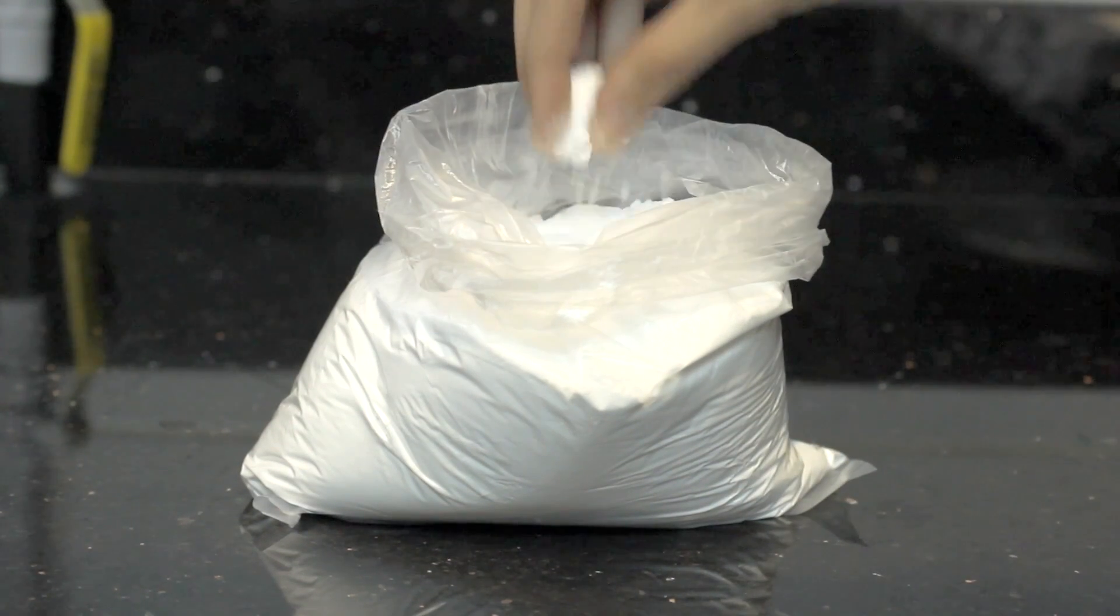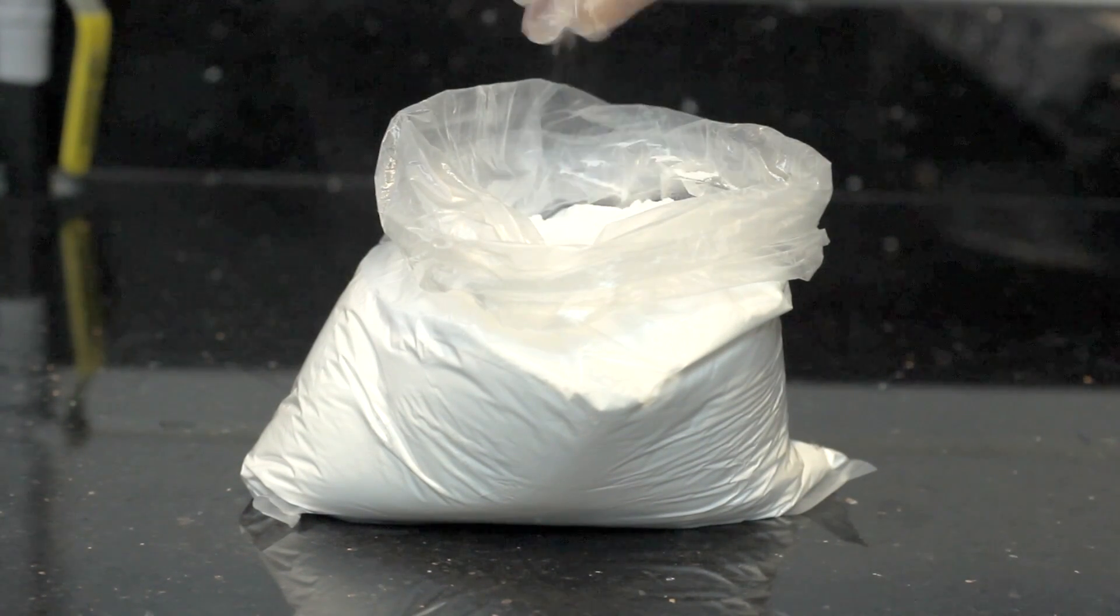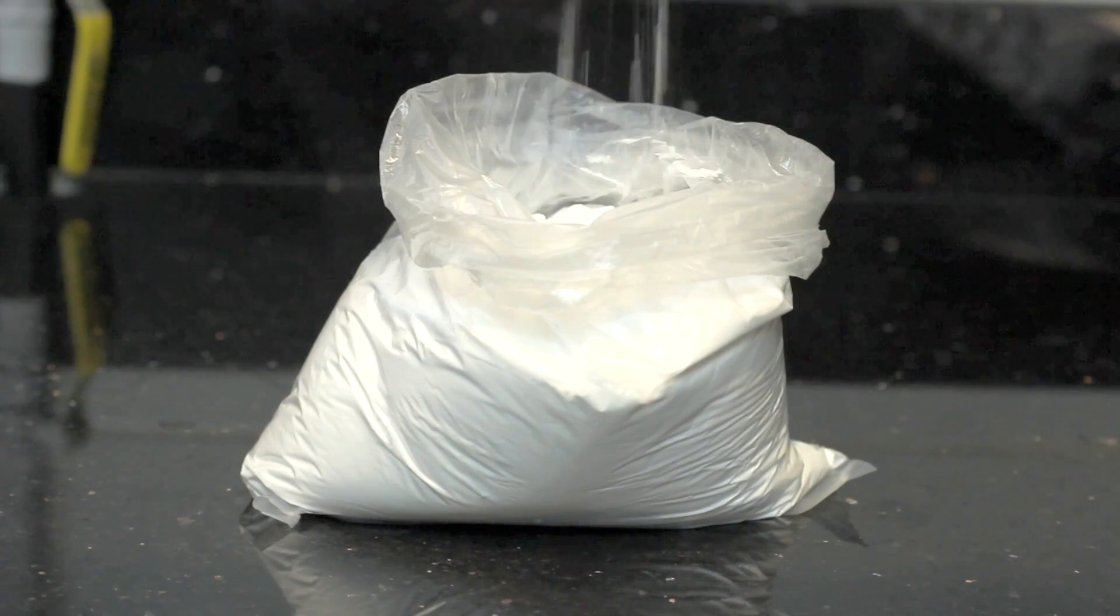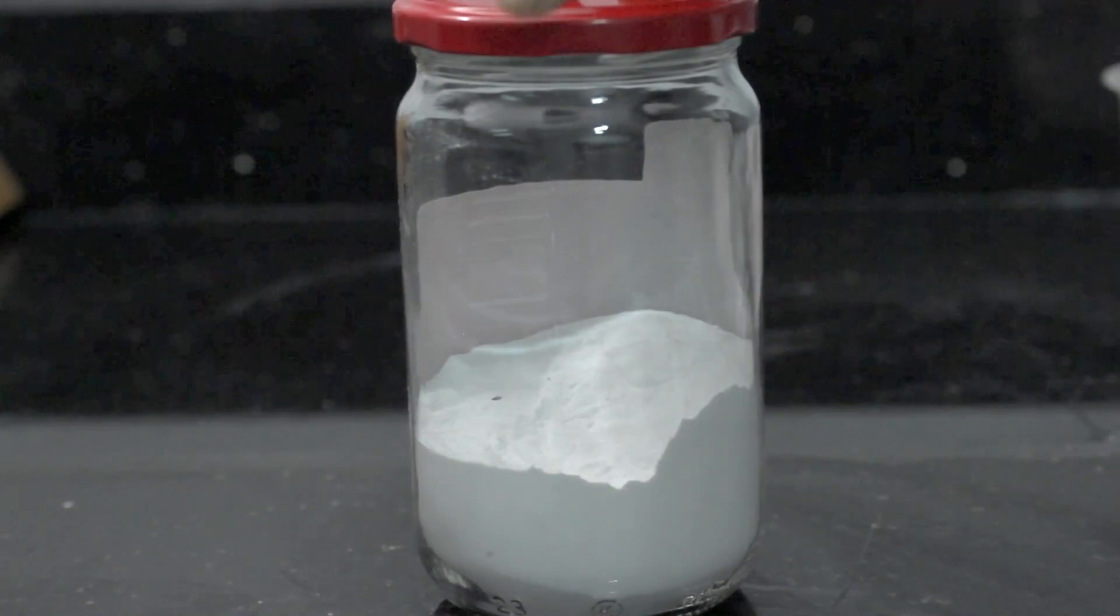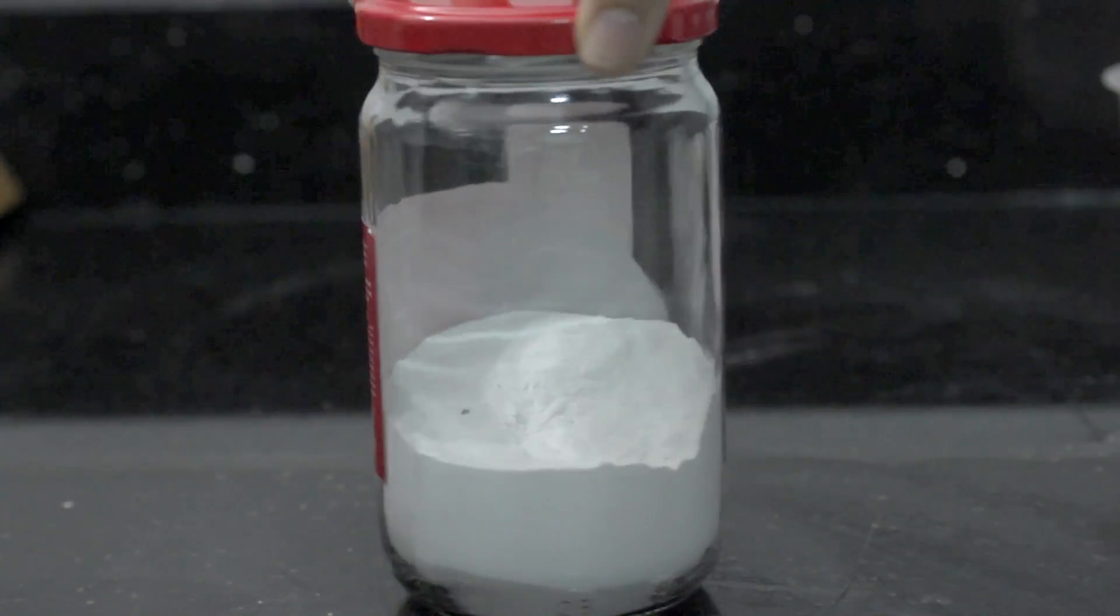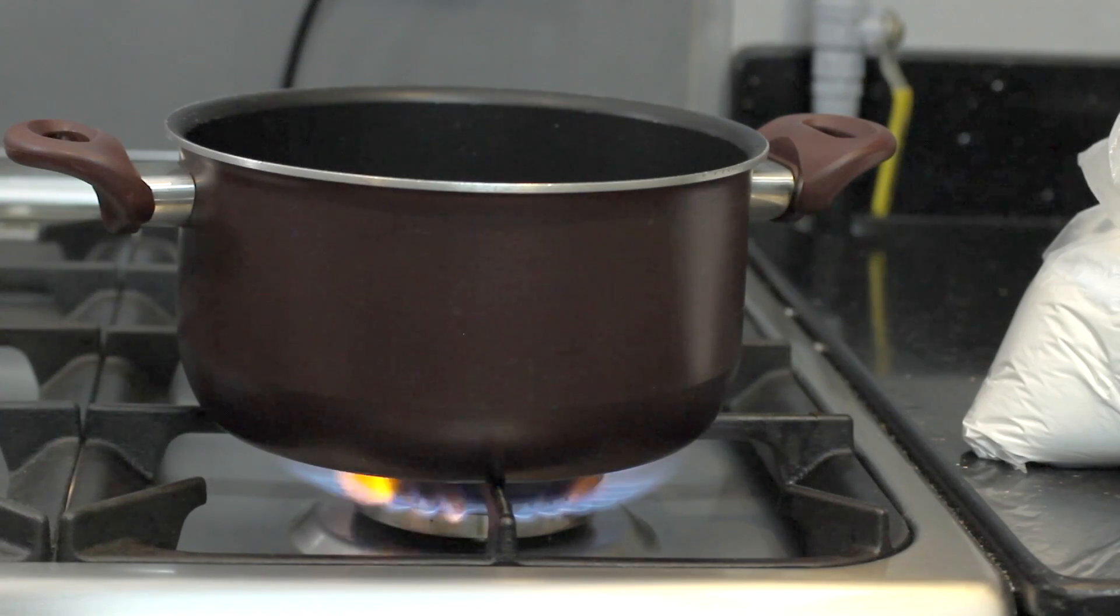In this video, I will be showing you how I turn baking soda into washing soda. Washing soda has many uses, but I intend to use it to make pigments out of dyes. So let's get straight into it.